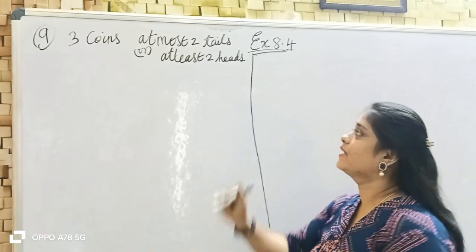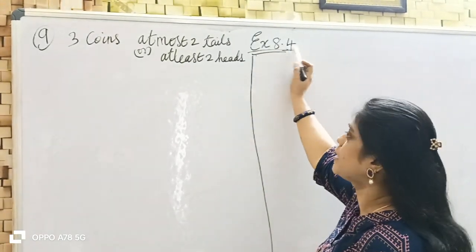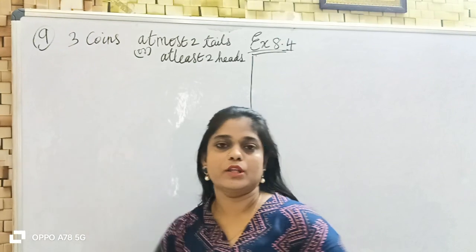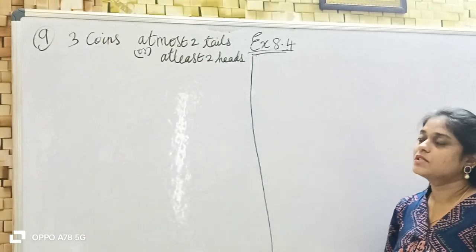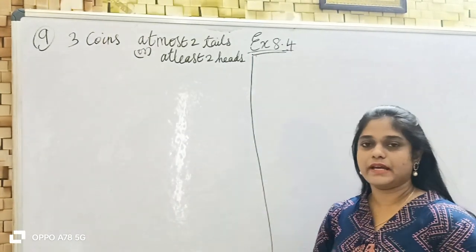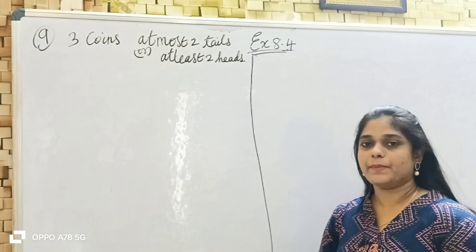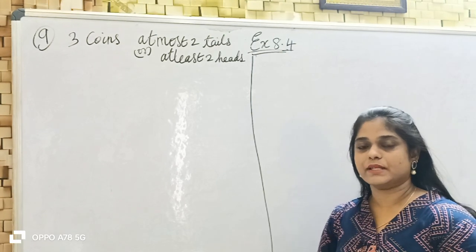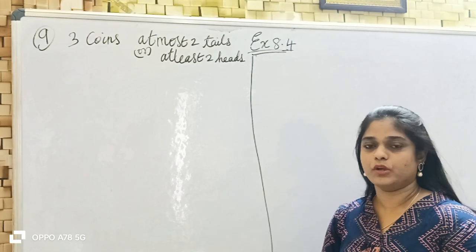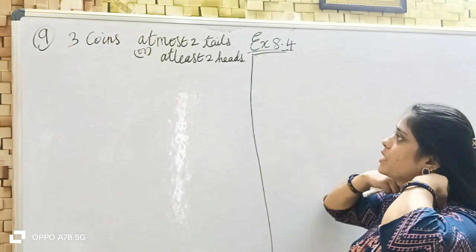Hi students! In this video, I will show you the 9th sum — an important sum. One coin, one dice, one card — you can choose the sum. Five marks are definitely in this sum. It is an important sum.